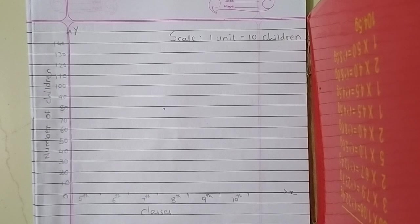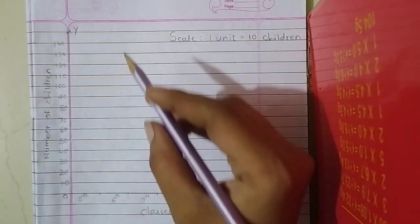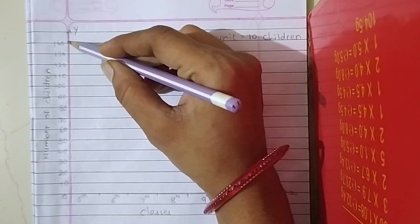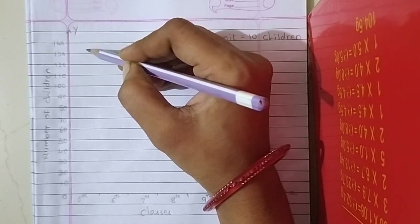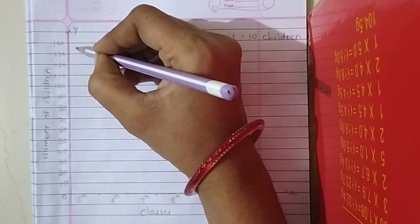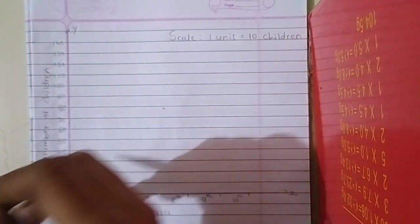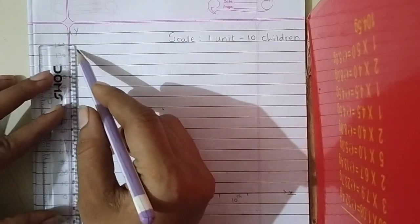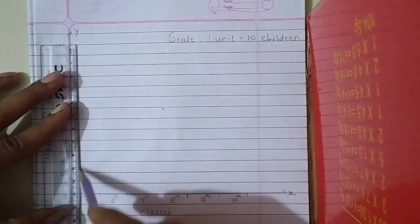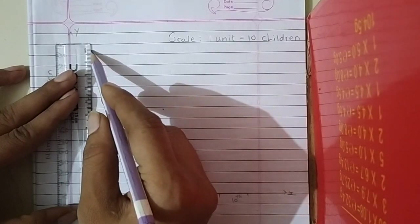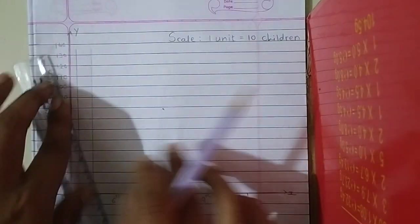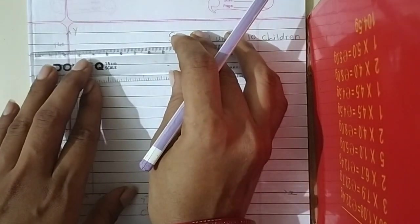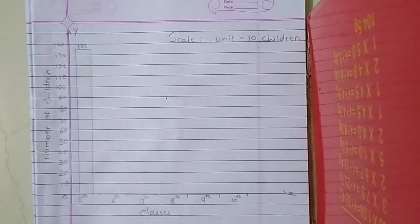Now in 5th class, 135 students are there. So where is 135? It is between 130 and 140. So here is mark out. First of all, draw a bar. 135. Take the gap of 1 centimeter. Write down here 135.